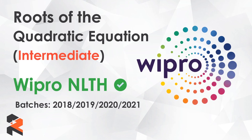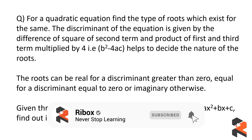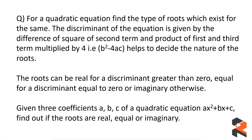Let's get started. The question is as follows: for a quadratic equation, find the type of roots which exist. The discriminant of the equation is given by b squared minus 4ac, which helps decide the nature of the roots. The roots can be real for a discriminant greater than 0, equal for a discriminant equal to 0, or imaginary otherwise. Given three coefficients a, b, and c of the equation ax² + bx + c, find out if the roots are real, equal, or imaginary.